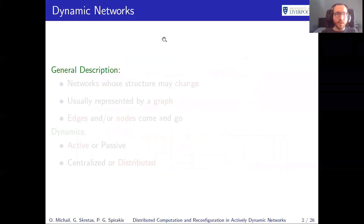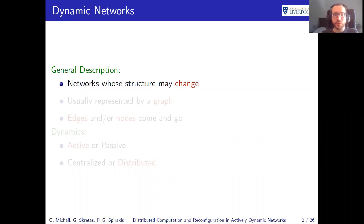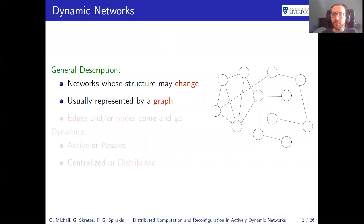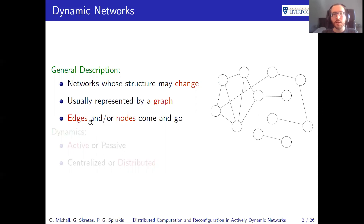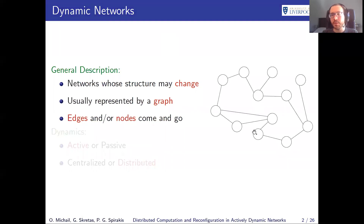So what are dynamic networks? They are networks whose structure may change for some reason, usually an external force or something else. We usually represent them by a graph, like the one here on the right, where we have nodes and edges. What makes the network dynamic is that the edges or the nodes may disappear or appear at times — edges might disappear, others may appear, or nodes may disappear as well.